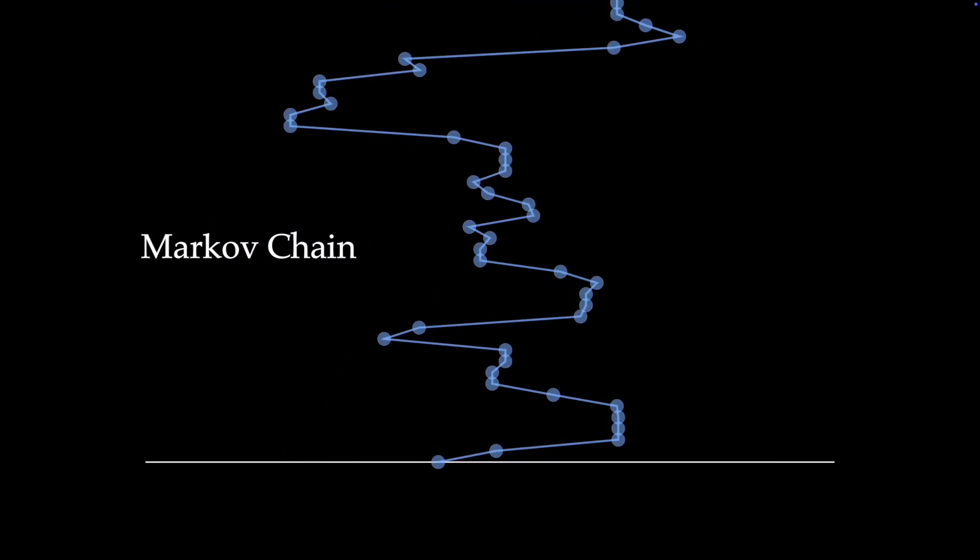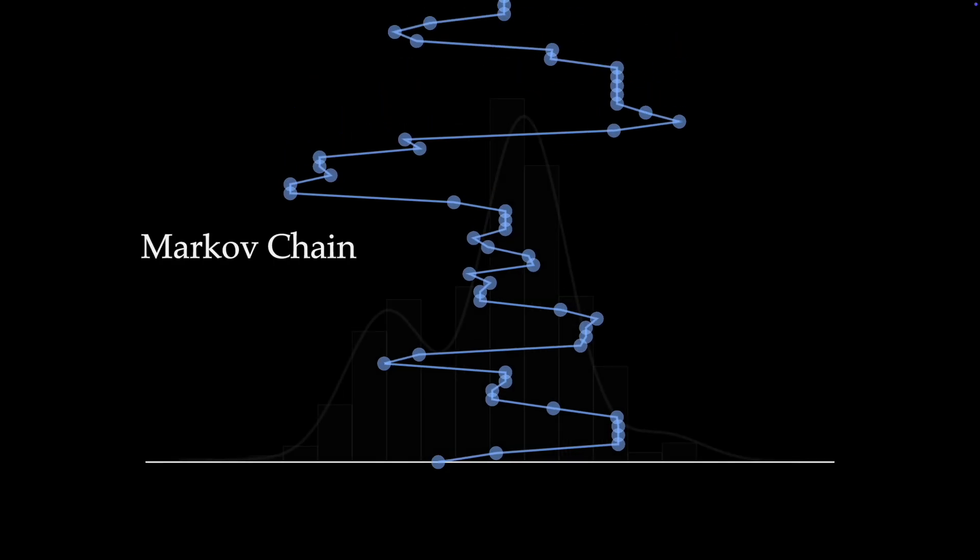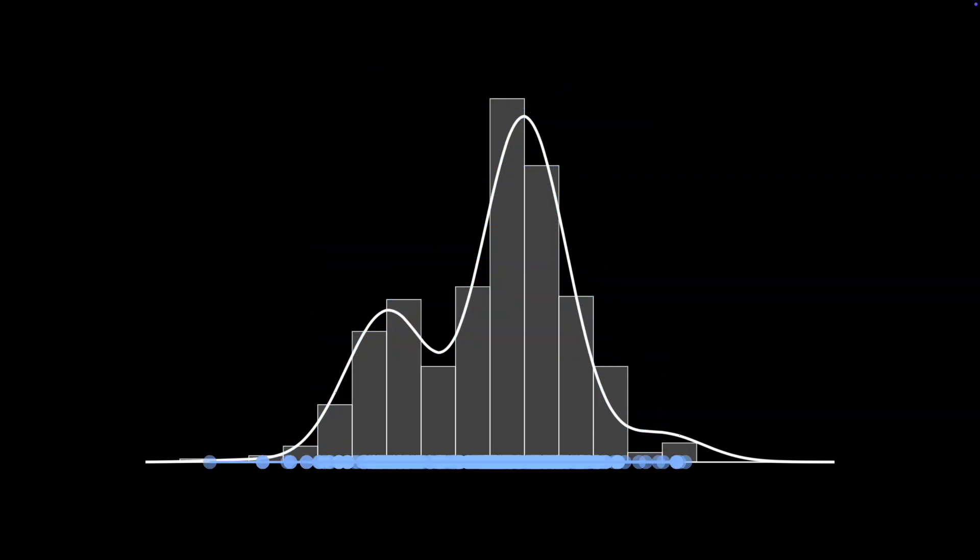MCMC works by creating a Markov chain of samples. A Markov chain is simply a chain of samples in which the next sample in the chain depends only on the value of the previous sample. MCMC builds up this chain in such a way that when we collapse it down, the samples in the chain appear to have come from the probability density we selected.